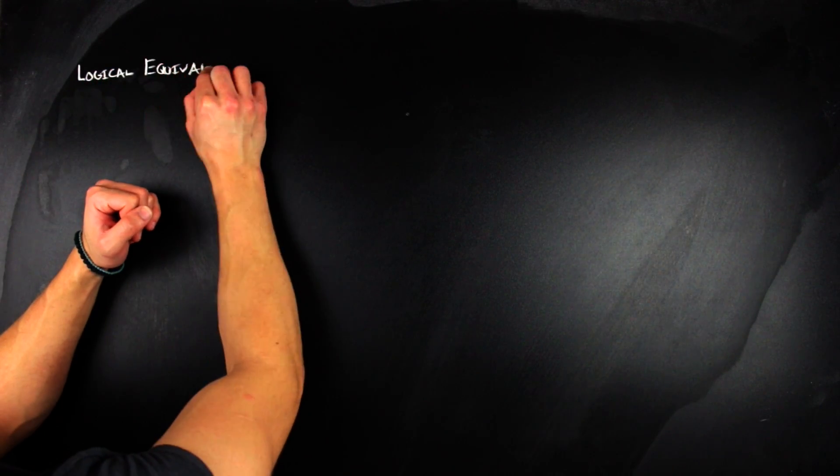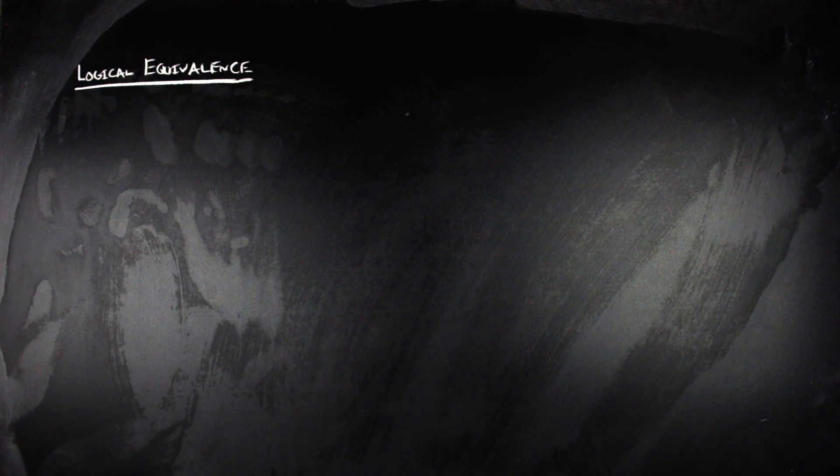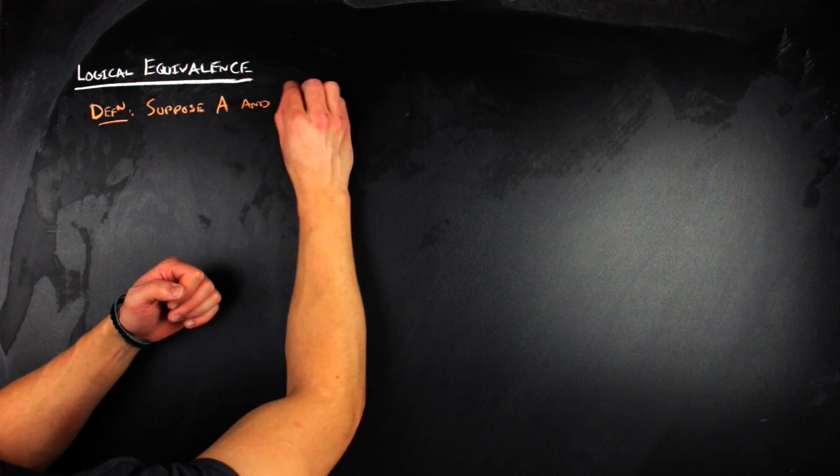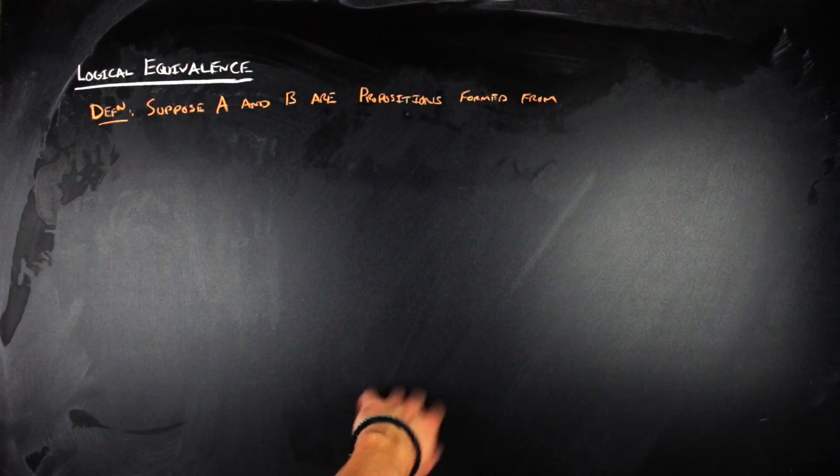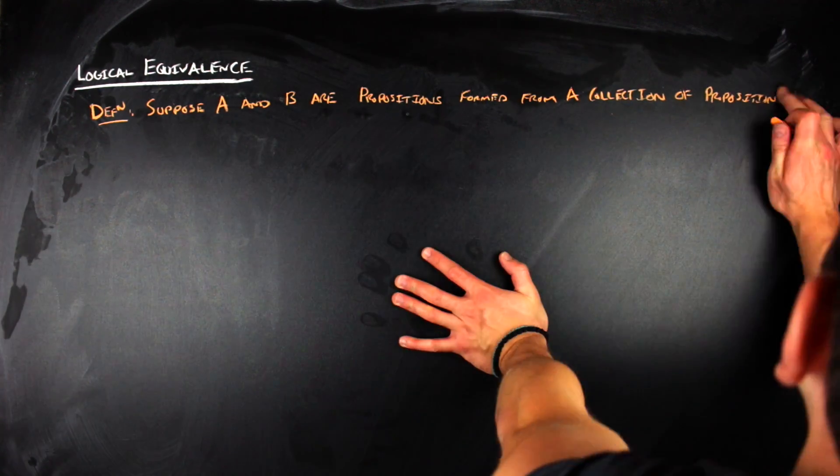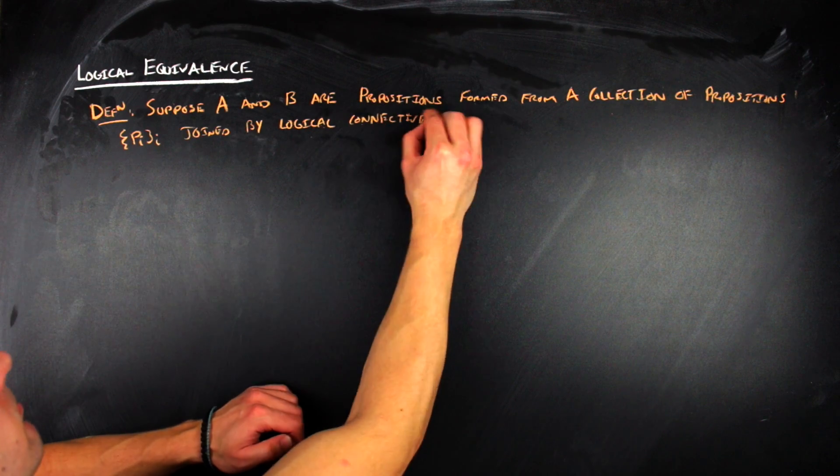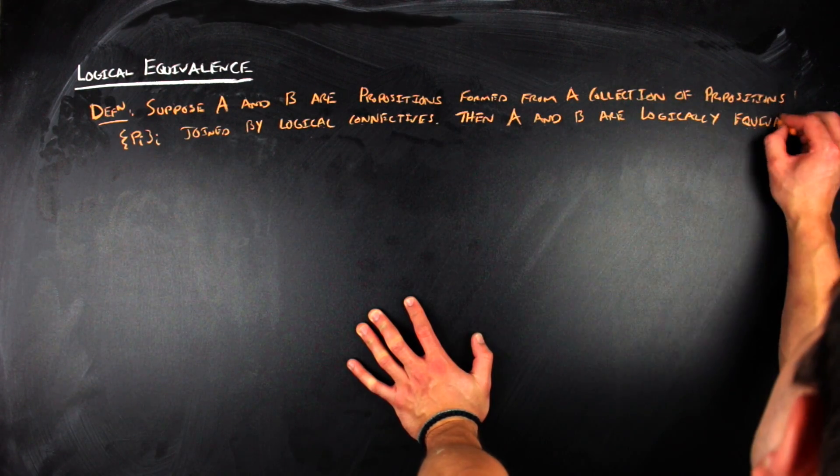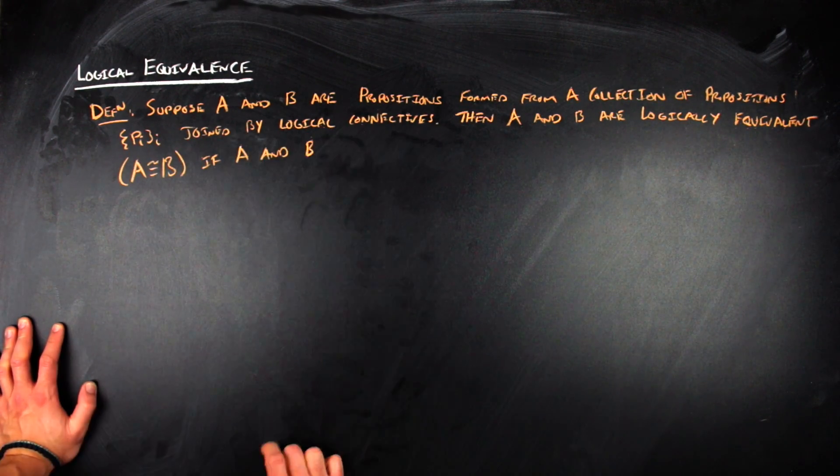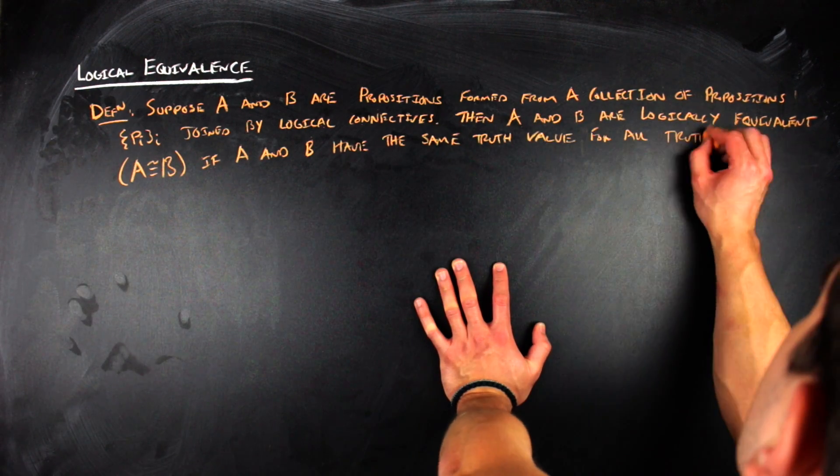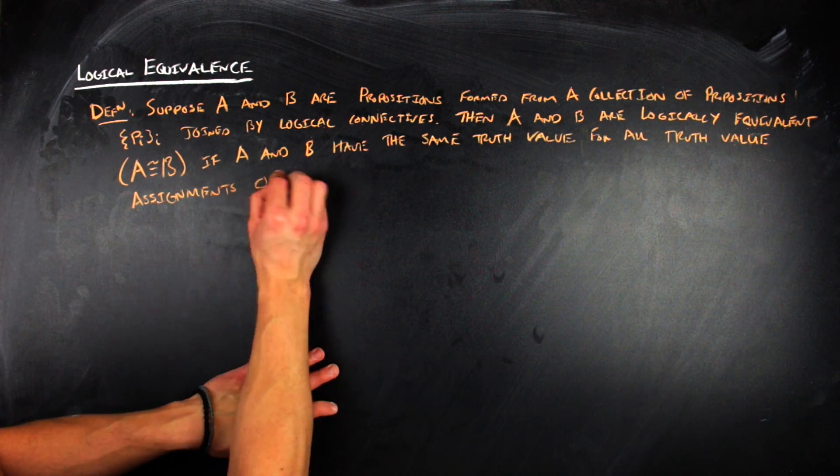The first one, and the usual one that you look at in mathematics when you're studying a new object, is the notion of what it means to be equivalent. This motivates the idea behind what it means to be logically equivalent. So by definition, suppose A and B are propositions formed from a collection of propositions, P_i, which are indexed by i, joined by logical connectives in some way. Then A and B are said to be logically equivalent, or A is congruent to B, if A and B have the same truth value for all assignments of the truth values of the P_i's.